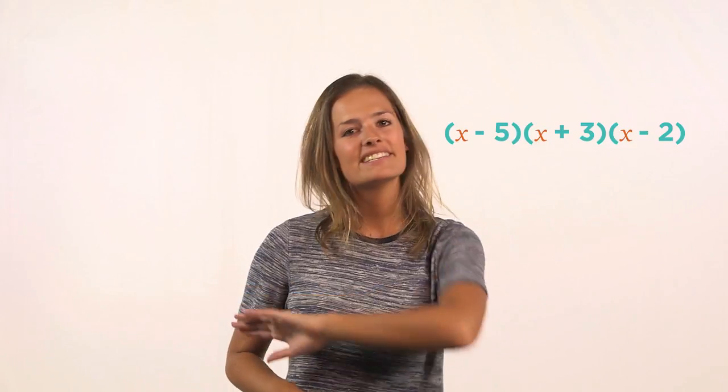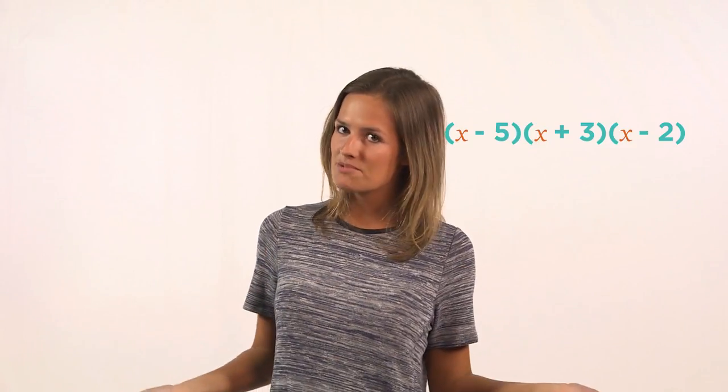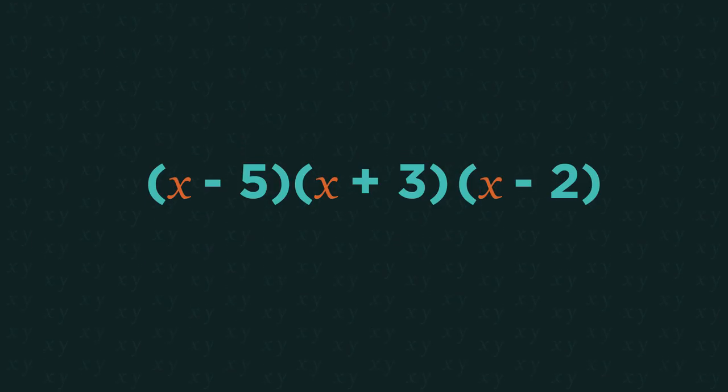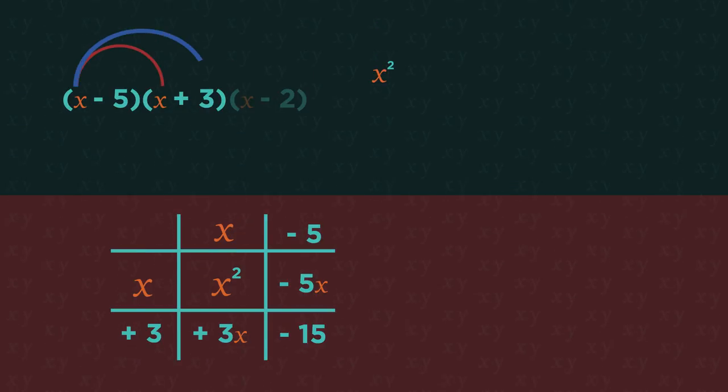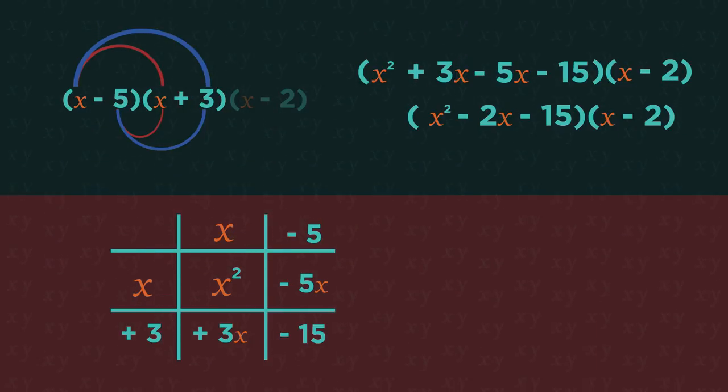So let's end with triple brackets. They follow the exact same process as double brackets. Start by expanding the first two brackets like you would normally: x squared plus 3x minus 5x minus 15, and simplify it.